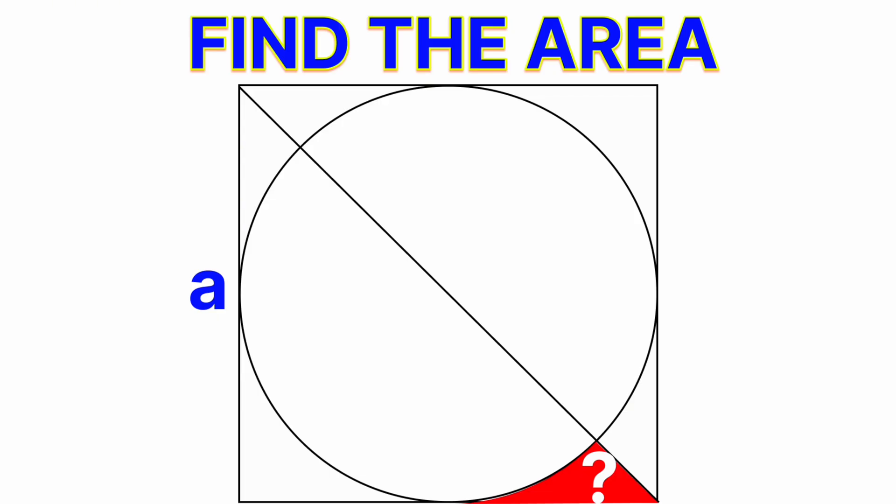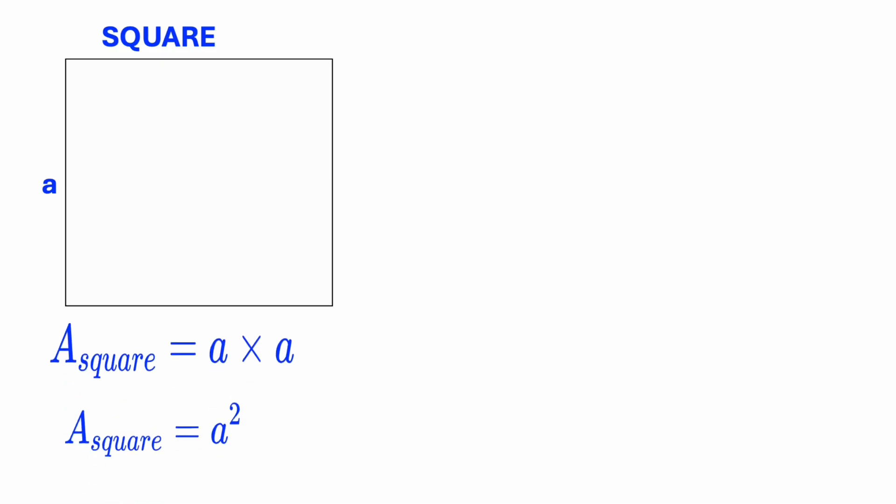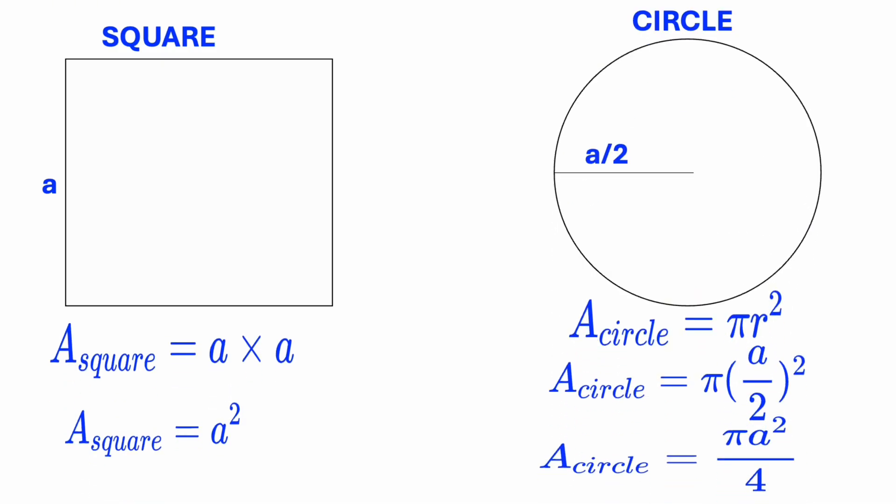Our job is to break it down bit by bit until we can work out exactly how much space that shaded part takes up. Let's zoom out and look at the bigger picture. If we place this shape into a larger frame, we can see it as a combination of two familiar shapes: a square and a circle, both with side length a. The circle is inscribed inside the square. It just touches all four sides.